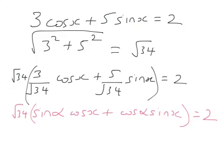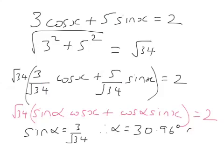So from this I can see that sin alpha is 3 over root 34, and from that I can work out what alpha is. And it's 30.96 degrees. That's to two decimal places.